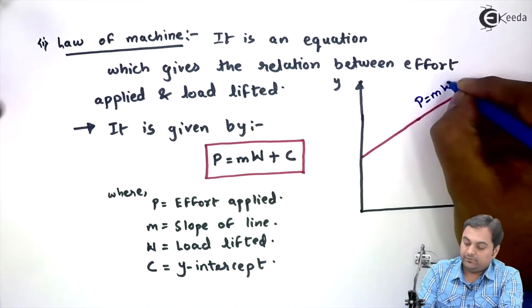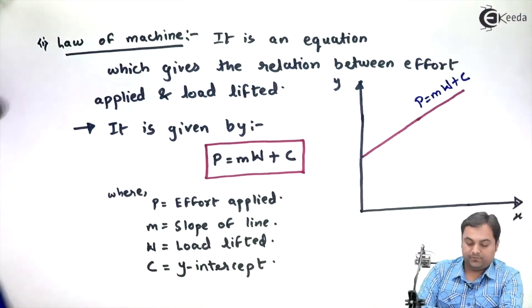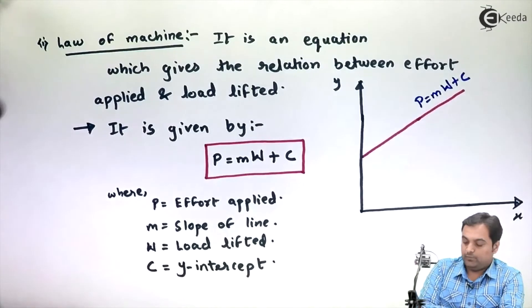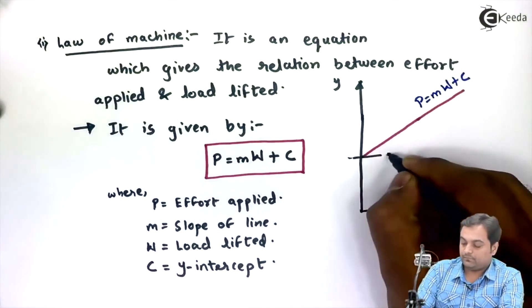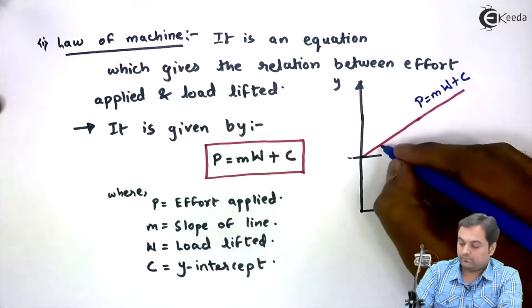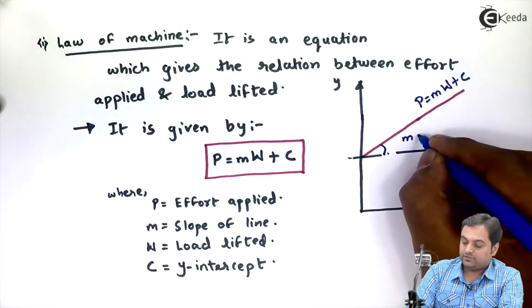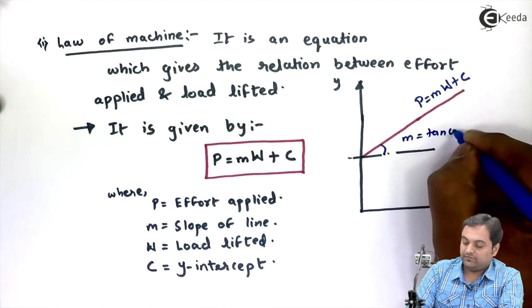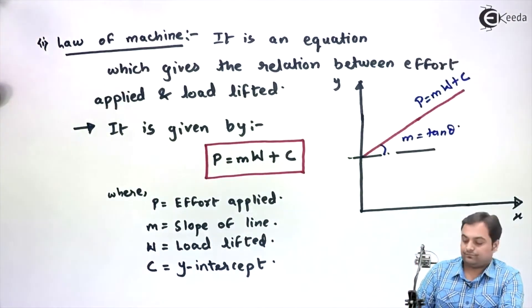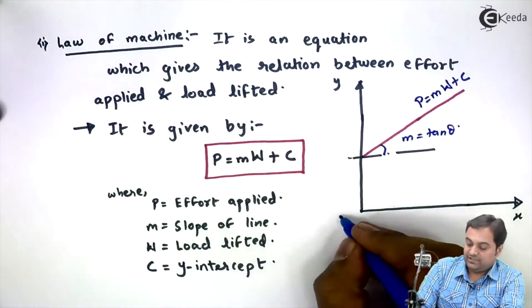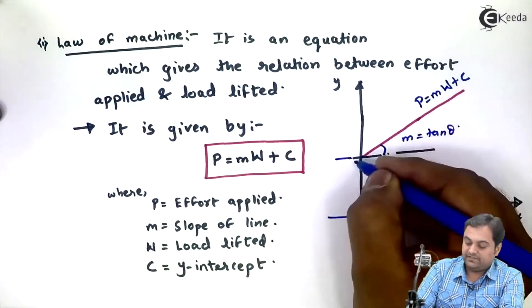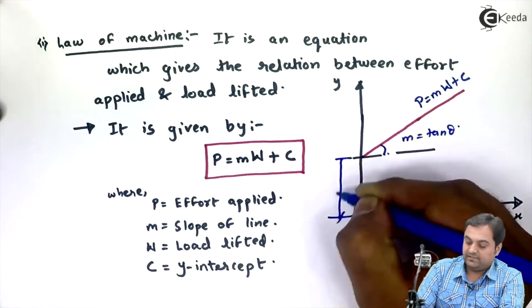This line represents the law of machine P equals M into W plus C, where M is the slope of the line which is equal to tan of theta, and C is the y-intercept, that is where this line is cutting the y-axis.